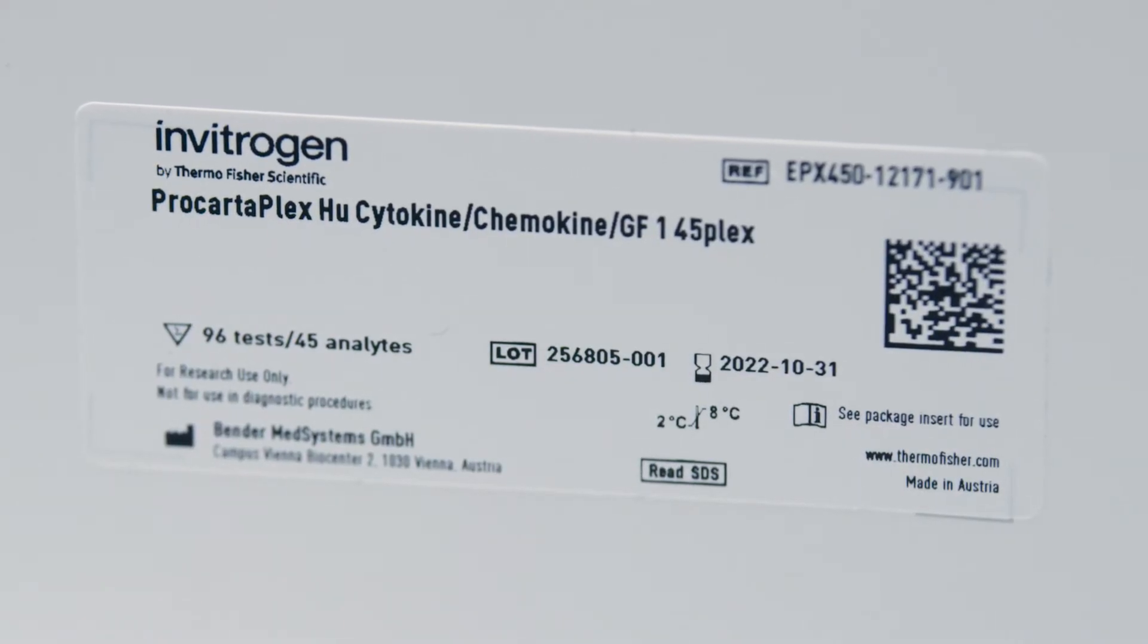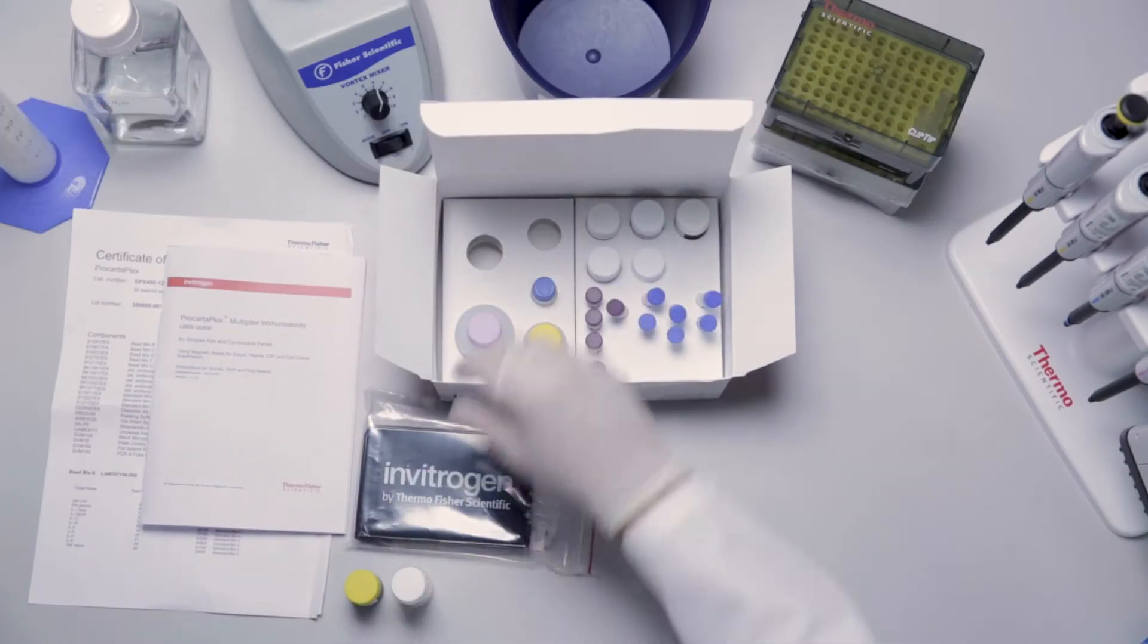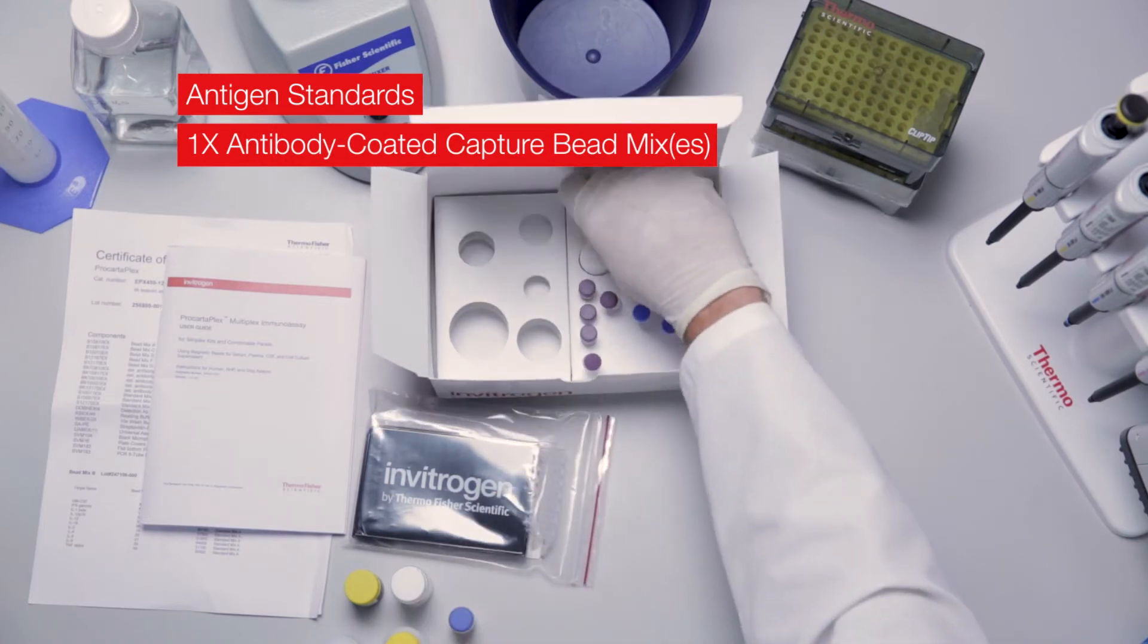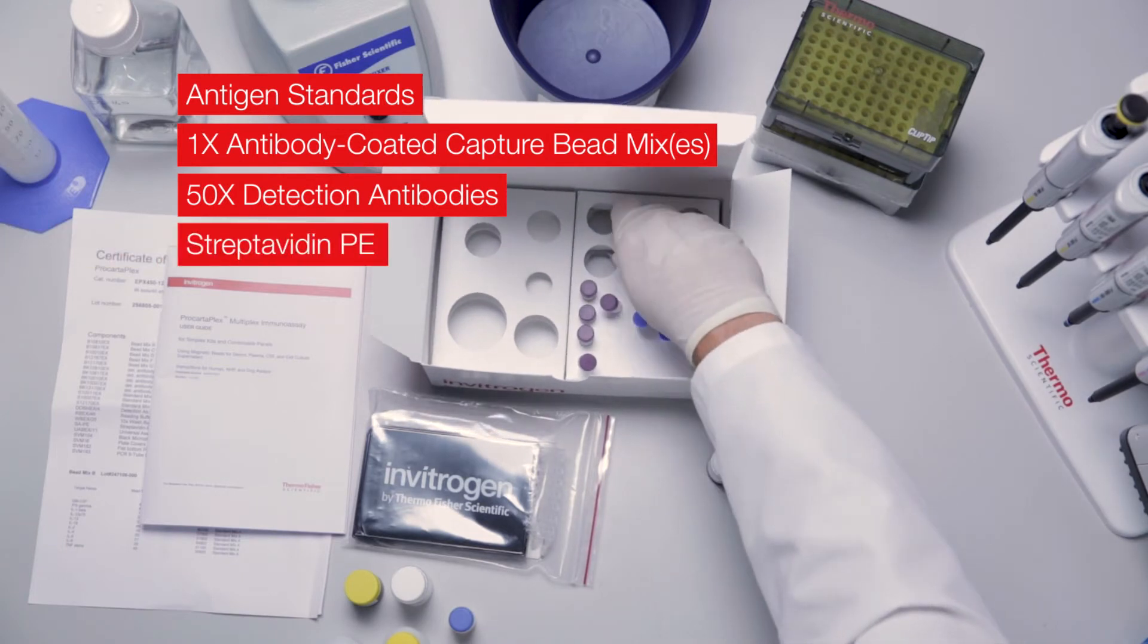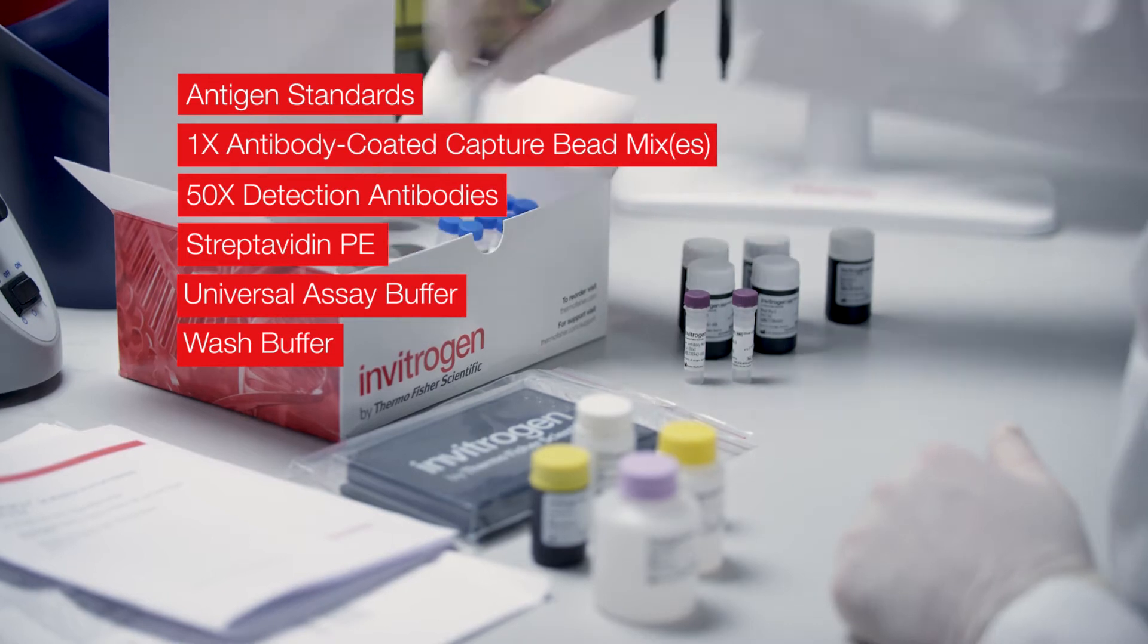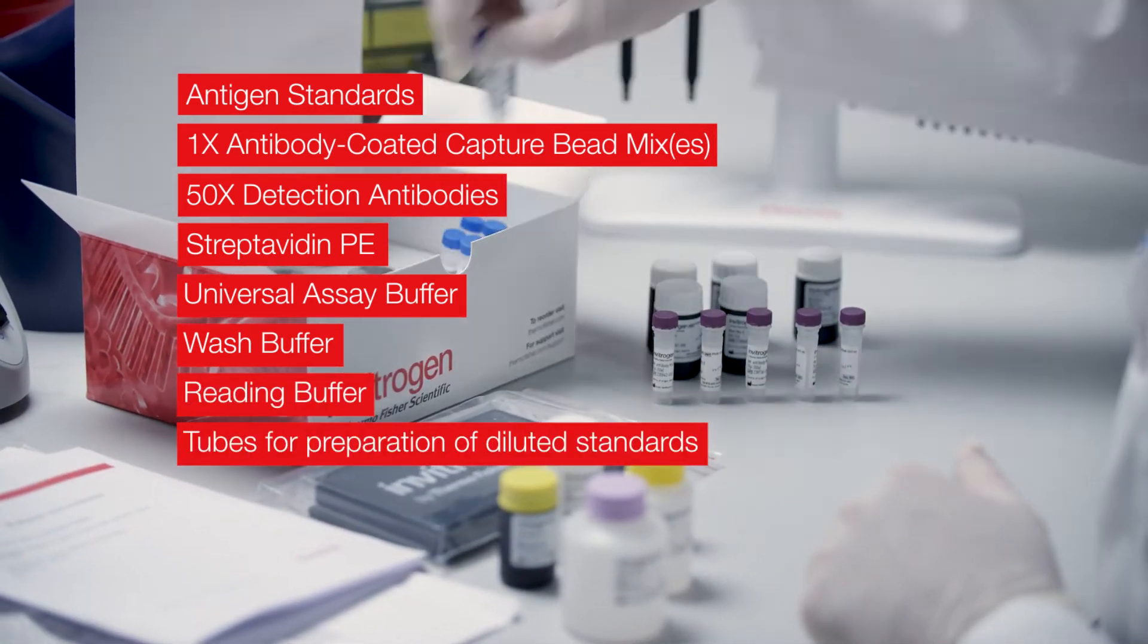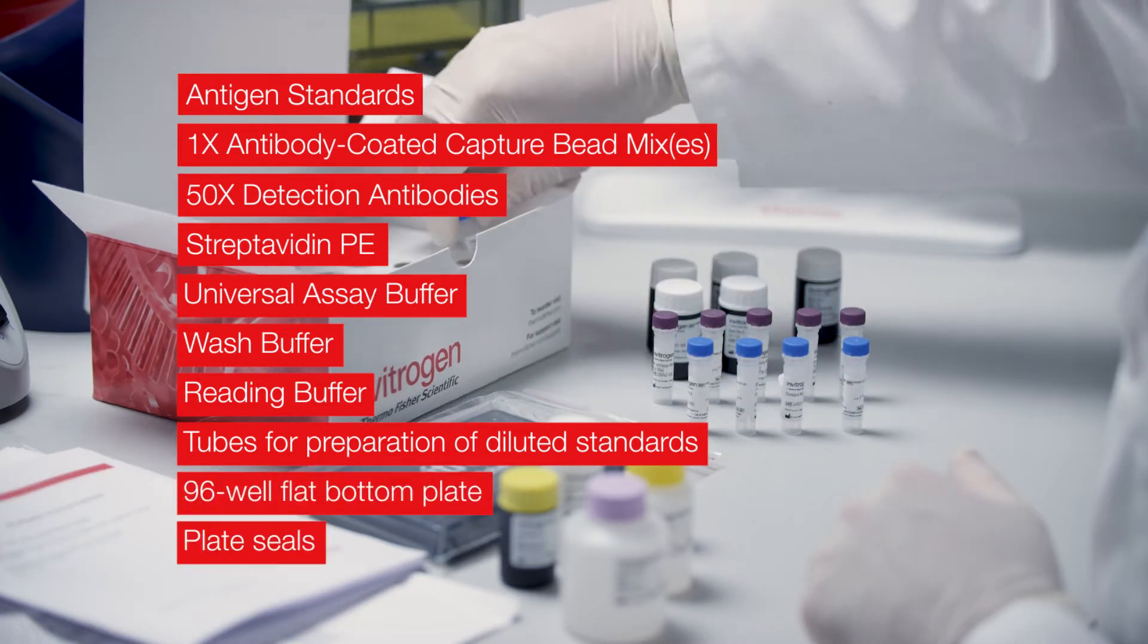The assay includes all necessary reagents. The kit contains antigen standards, 1X antibody-coated capture bead mix or mixes, 50X detection antibodies, streptavidin PE, universal assay buffer, wash buffer, reading buffer, tubes for preparation of diluted standards, a 96-well flat bottom plate, and plate seals.